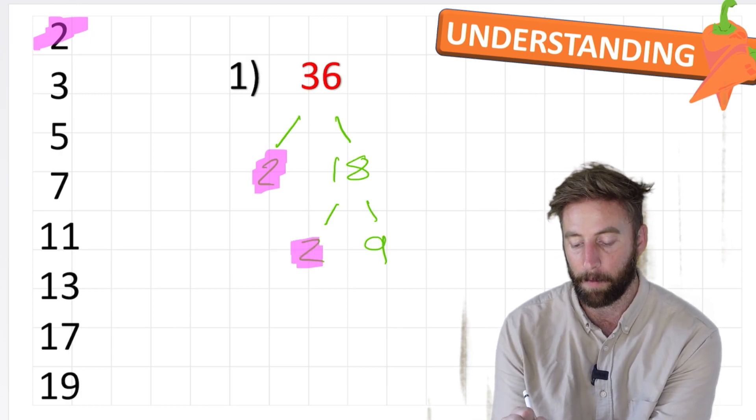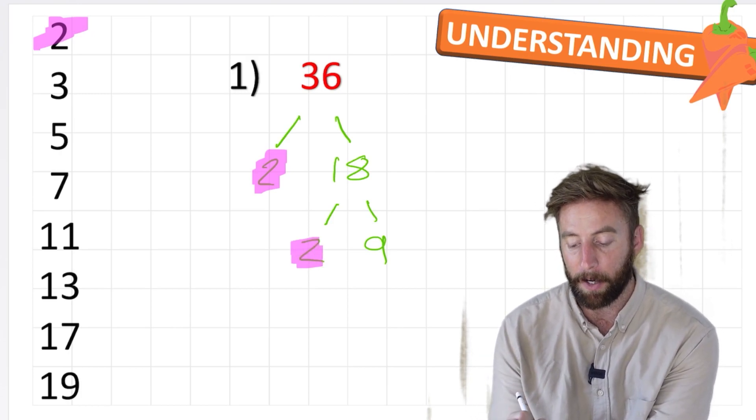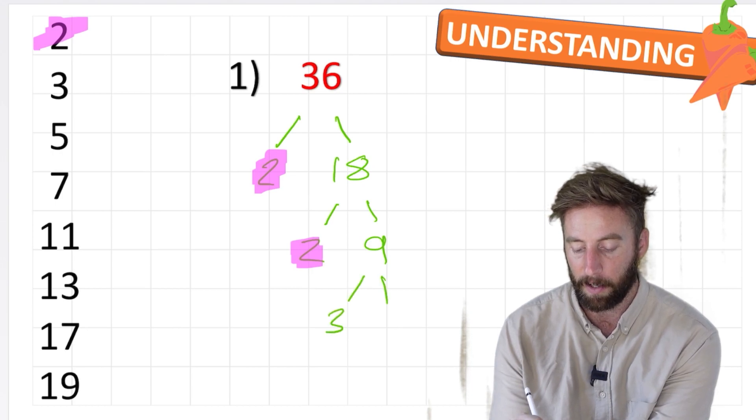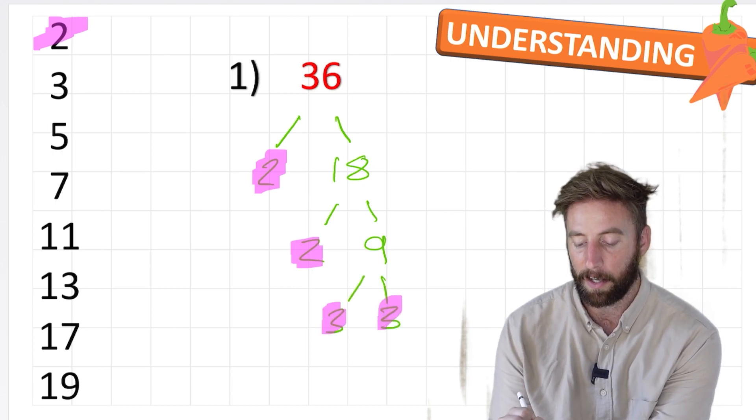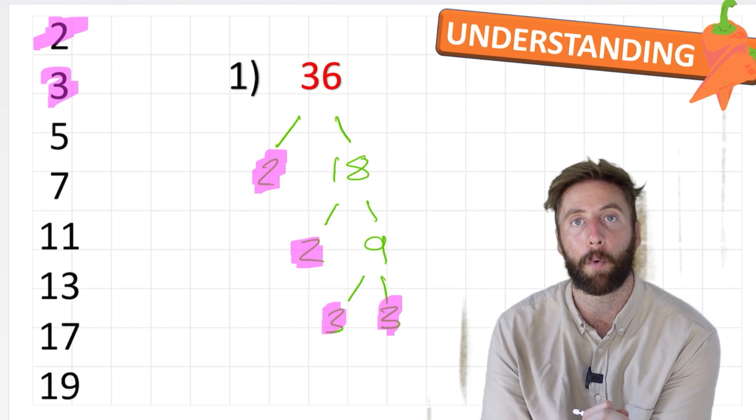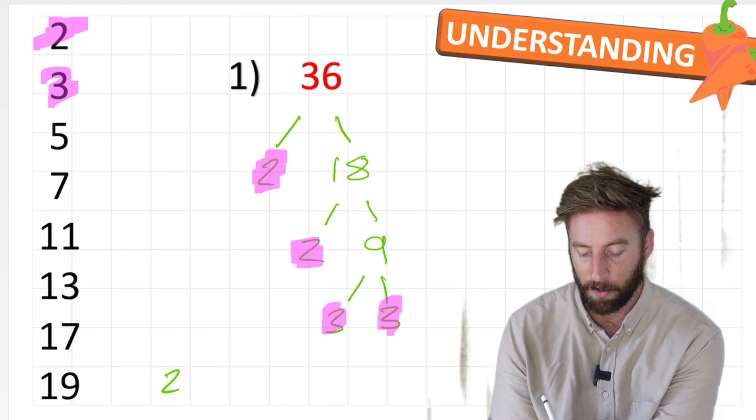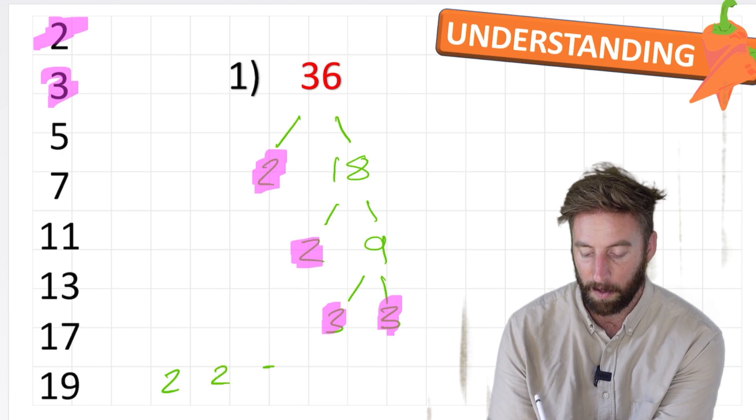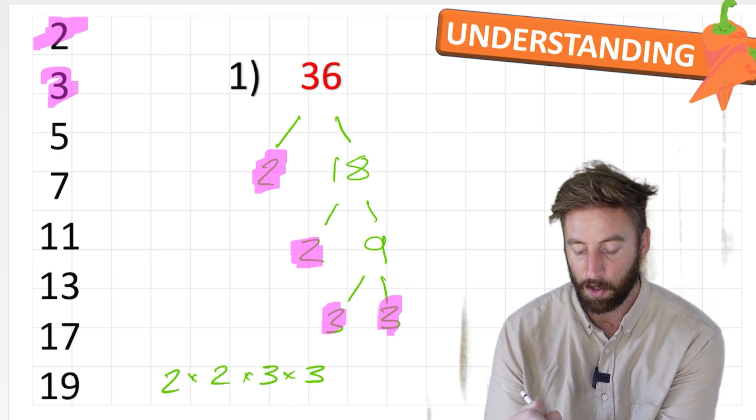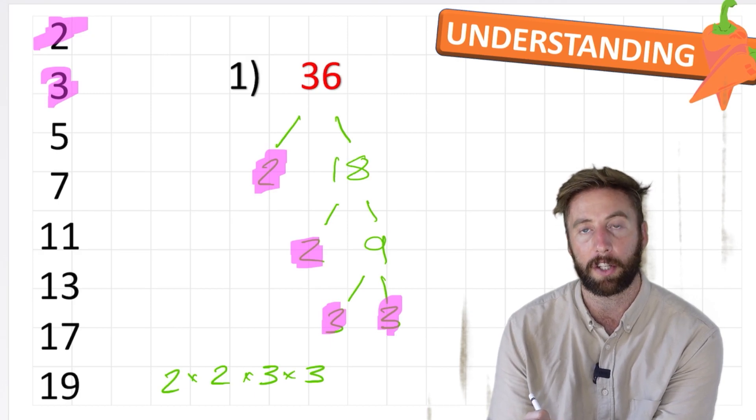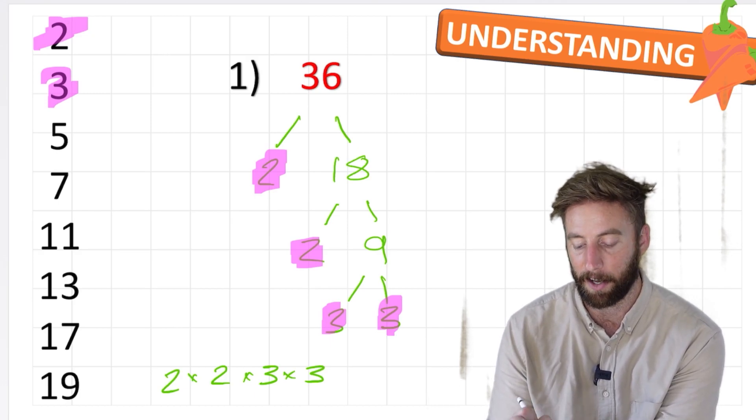And again, I found another prime number. Now, 9 is not a prime number because it can be made up of 3 times 3. 3 is a prime number. Therefore, we know we've finished. So what are the prime factors of 36? We have 2, 2, 3, and 3. Let's check. 2 times 2 is 4. Times 3 is 12. 12 times 3 is 36.